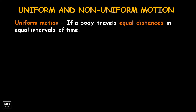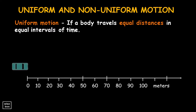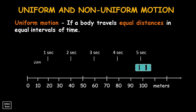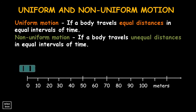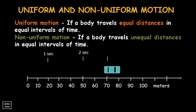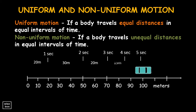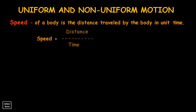If a body travels equal distances in equal intervals of time, it is said to be in uniform motion. In here, the car travels 20 meters for every second. Then 30, then 20, 15, and then 15 meters in the last — this is non-uniform motion. The speed of a body is the distance traveled by the body in unit time.